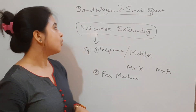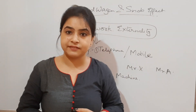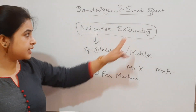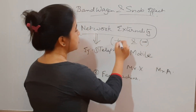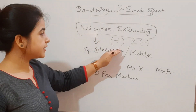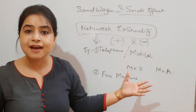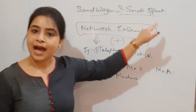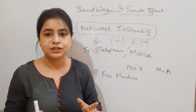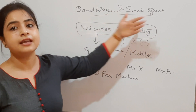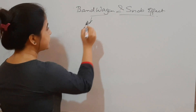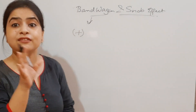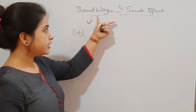So whenever we have goods where the demand by one individual or institution depends on another person's or institution's demand for that same good, we are facing network externality. Just like general externality, network externality can be either positive or negative. The Bandwagon Effect arises from positive network externality, and the Snob Effect arises from negative network externality.